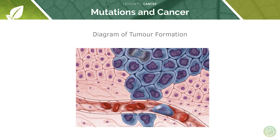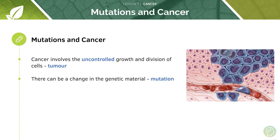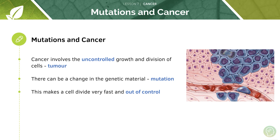Cancer involves this uncontrolled growth and division of cells to form a tumour. This may occur as a result of a change in genetic material — a genetic mutation — that leads to the uncontrolled growth and division of cells. You can see an irregular pattern amongst the tumour compared to the normal cells. Tumour cells are larger and more irregularly arranged than normal cells, and you can also see them undergoing mitosis because they're proliferating really fast. Remember, a tumour is just this group of cells experiencing uncontrolled growth.